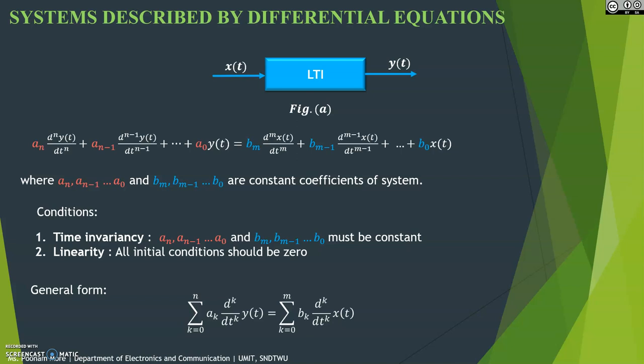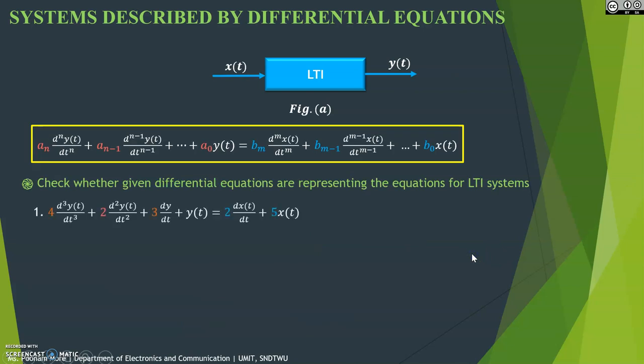The order of this equation is N — it depends on the highest order of the equation. Let's look at some examples and determine whether a given equation represents an LTI system or not.